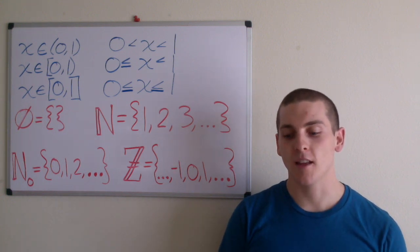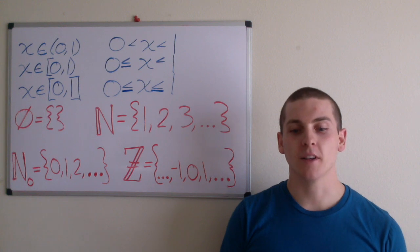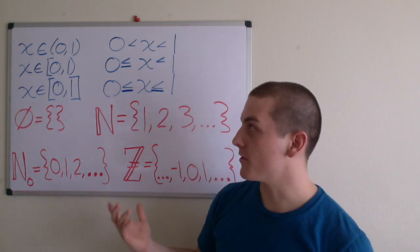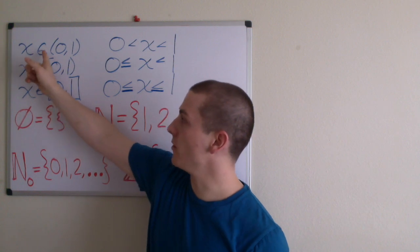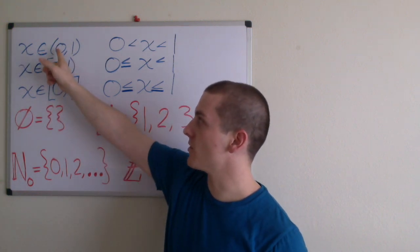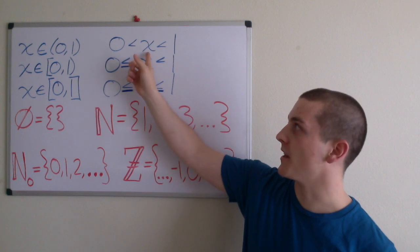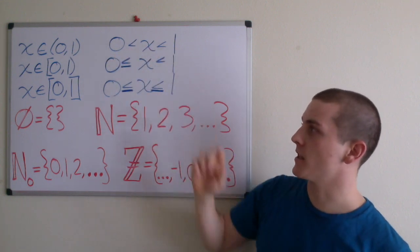Suppose we wanted to say that the variable x is between 0 and 1. Well, we could do just that. We could say that x is an element of the interval 0 to 1, which is really saying x is greater than 0 and x is less than 1.